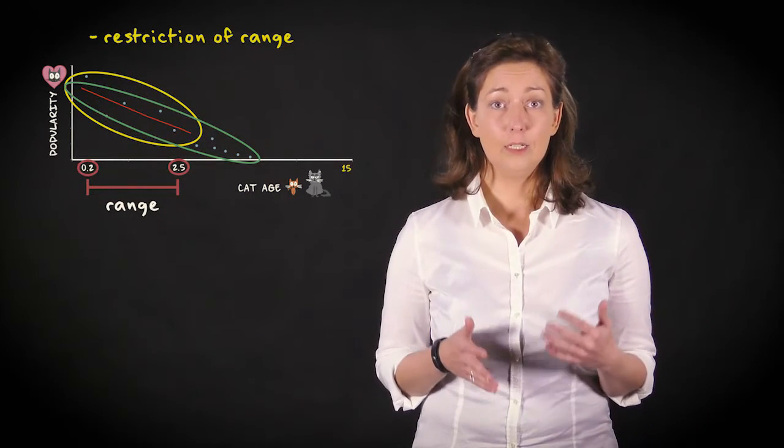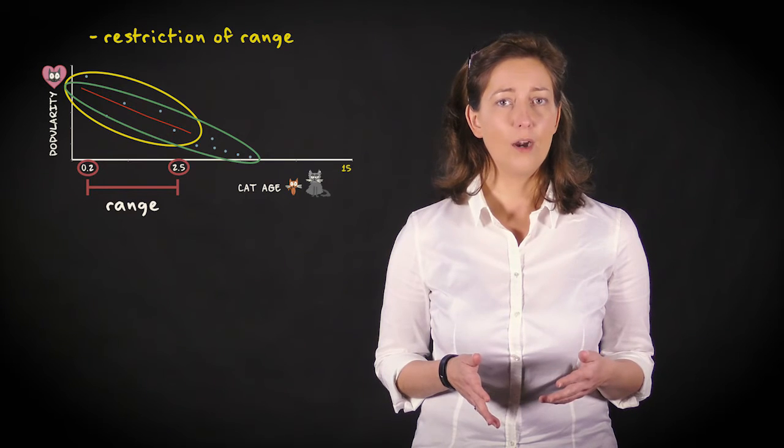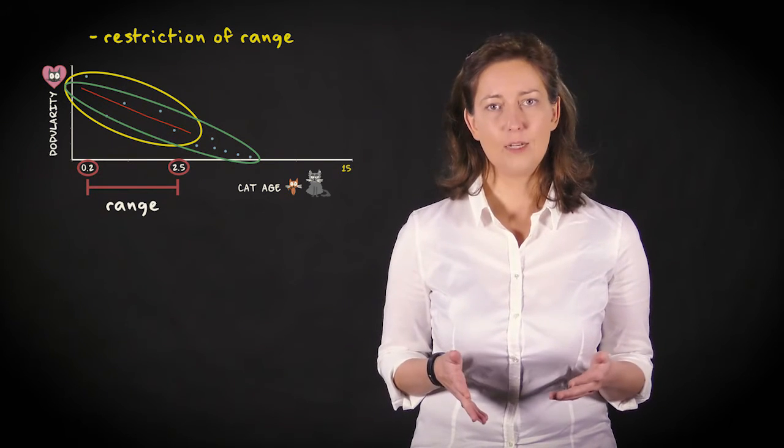Restriction of range can seriously lower Pearson's R and R squared. The location of the regression line is less affected, however.